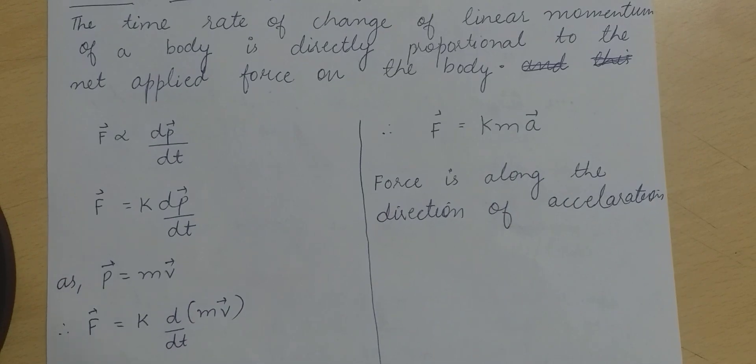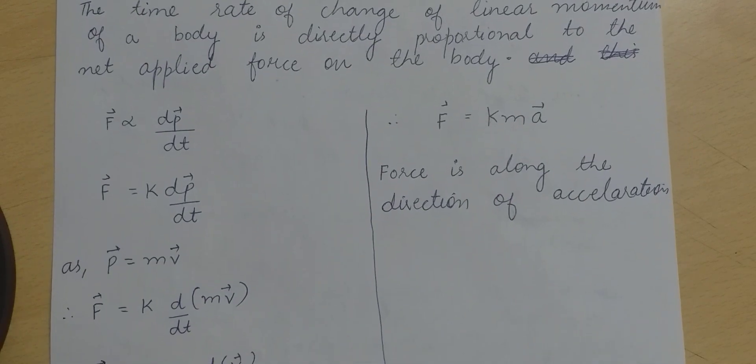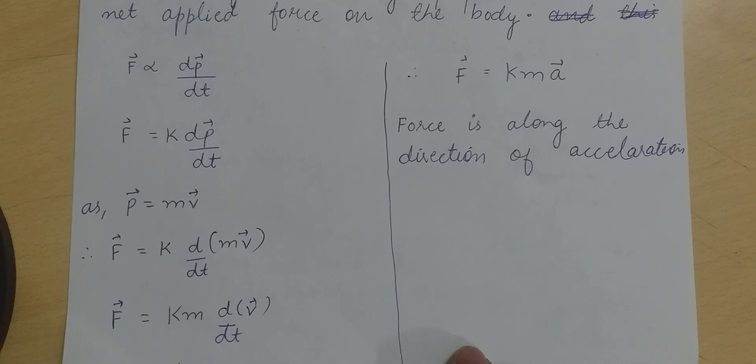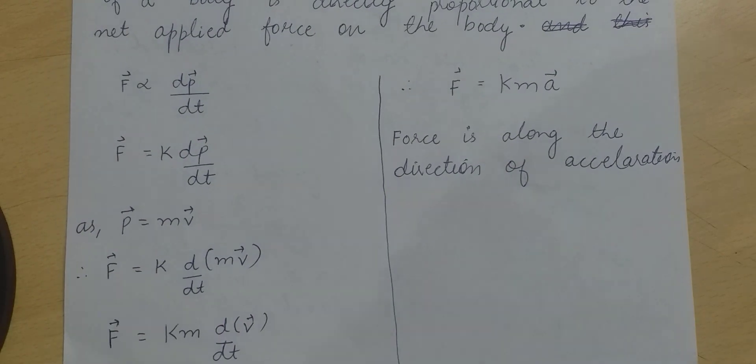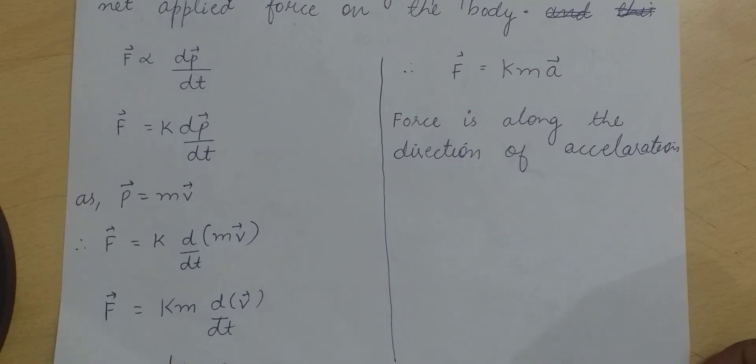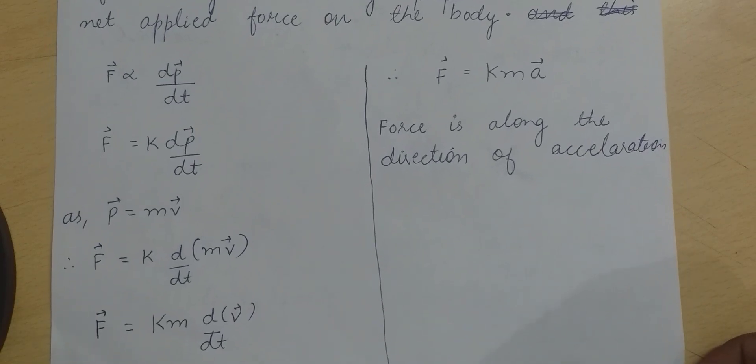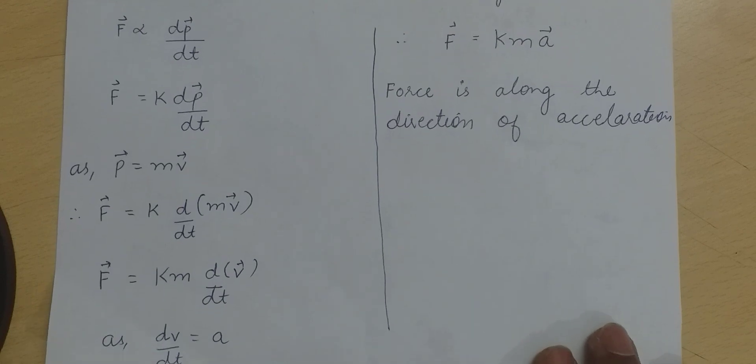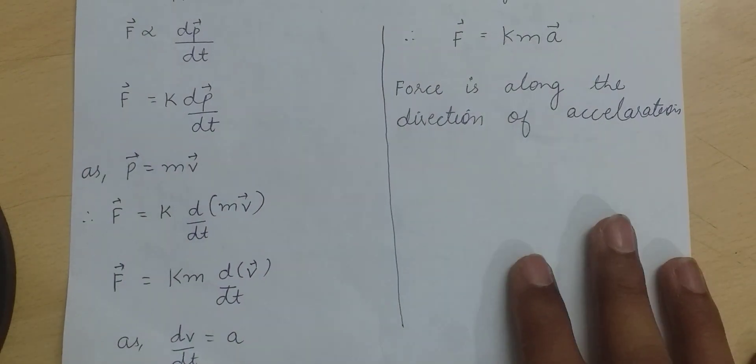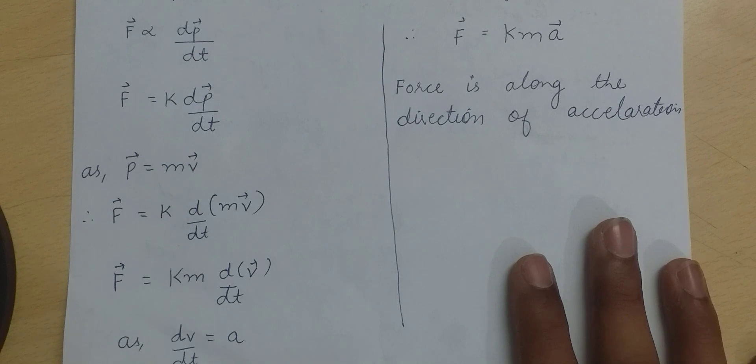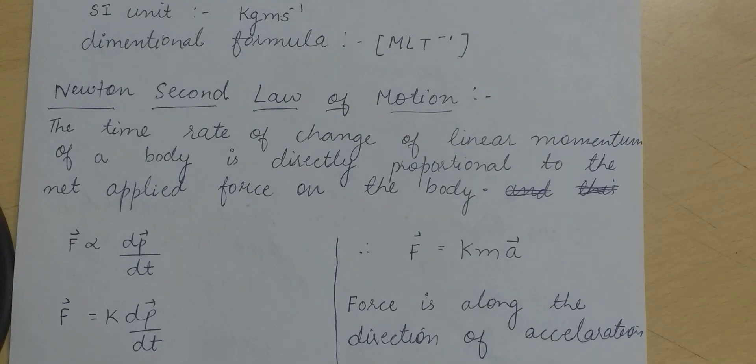Force equal to k dp vector by dt. As we know p vector equal to m v vector, so F vector equal to k d(m v vector) by dt. This can also be written as F vector equal to km dv vector by dt. As we know dv upon dt equal to acceleration, so F vector equal to kma vector.